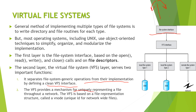The VFS interface provides a mechanism for uniquely representing a file throughout the network. It separates file systems into local file systems and remote file systems. As shown here, local file system type one and type two come from our local system, while a remote file system type comes from a remote device such as FTP or DFS.